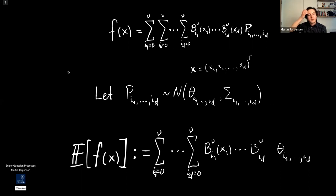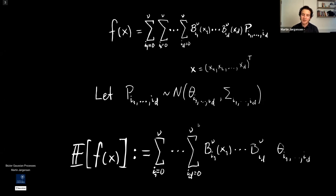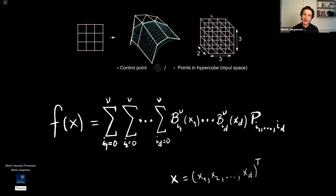Why is this convenient? I can analytically compute the expectation for any f(x). I take the expectation of the left-hand side and the only random part is the control point, so I move the expectation inside the sums. The expectation is of course theta. This is convenient because usually in Gaussian processes we have to invert matrices, but here there's no matrix inverse. There is a potential problem of a very big sum for high-dimensional input — exponentially many summands — and we'll show how to handle this.